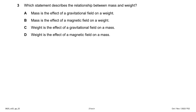Which statement describes the relationship between mass and weight? The formula is: weight = mass × gravity. Options B and D involve magnetic field, so they are irrelevant. Weight is the effect of the gravitational field on mass — so C is the right answer.